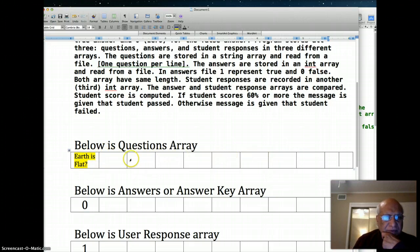The answer key array has answers recorded as 0 or 1. Earth is flat is the question, and the answer key is 0, which means false. In the questions array and the answer key array, there's a match between question and the answer. So this is the question, the answer is in the same element - same array index. There's this mapping.